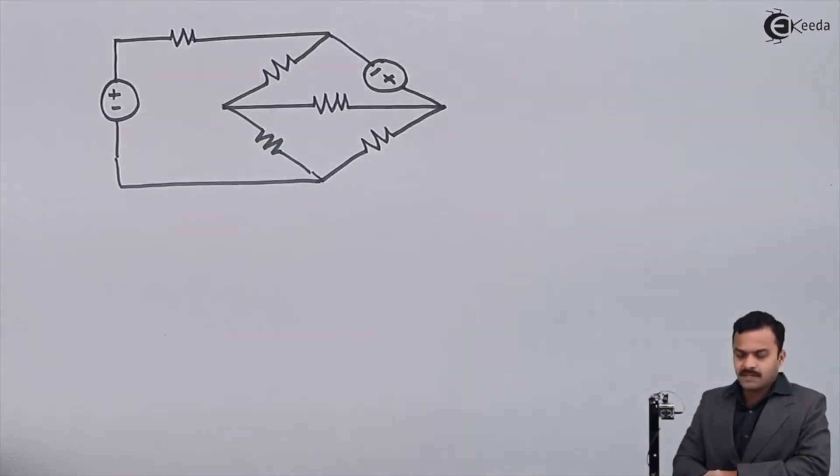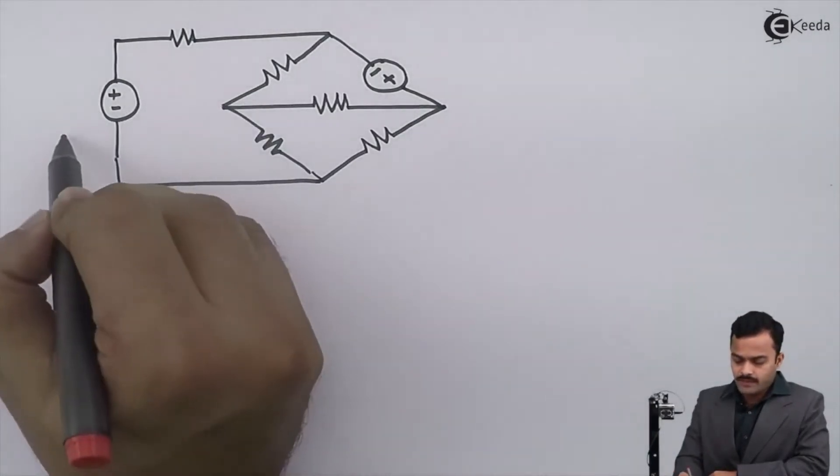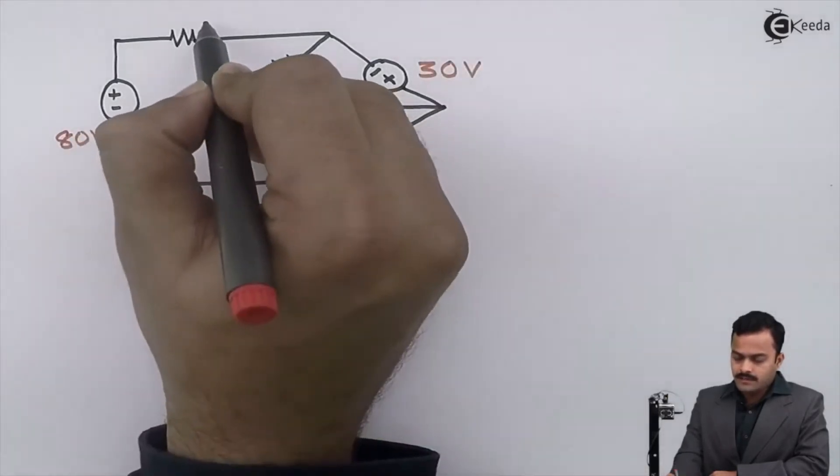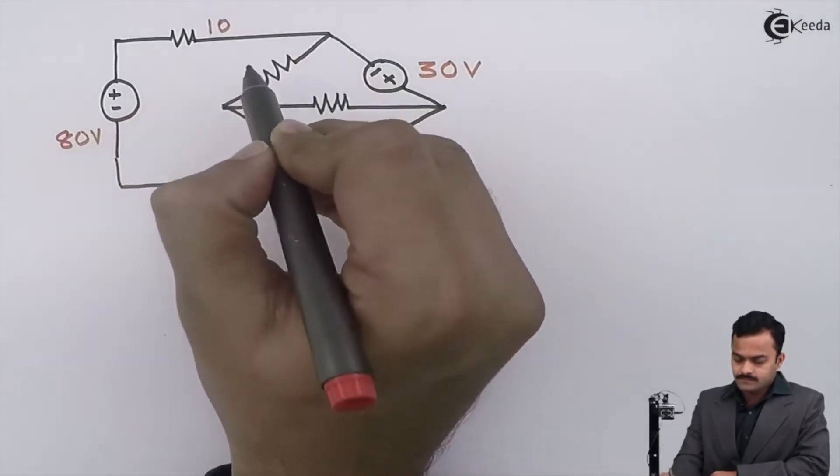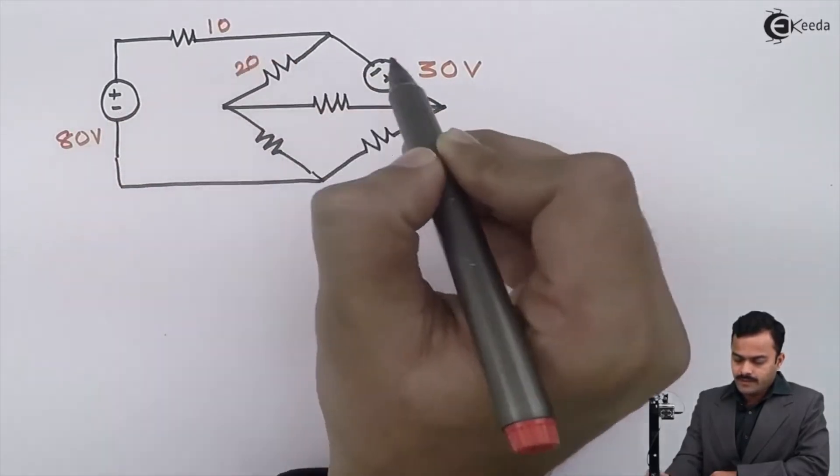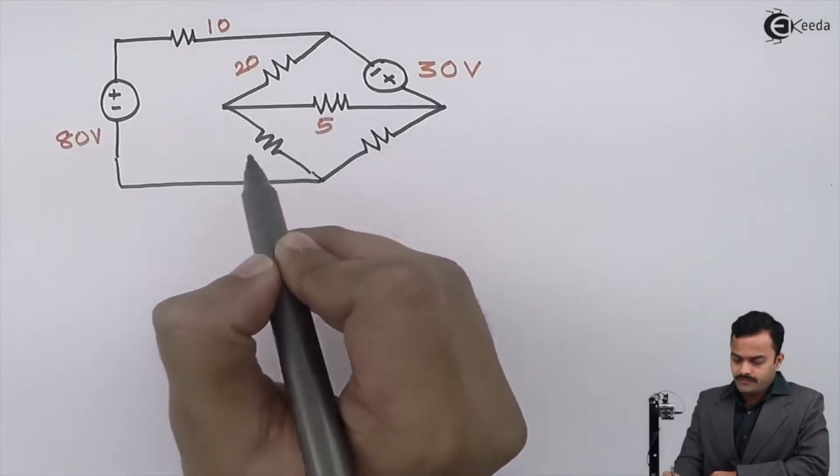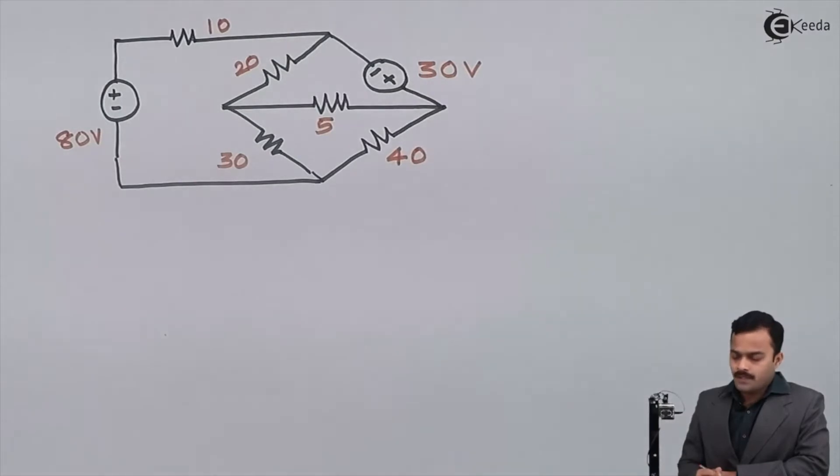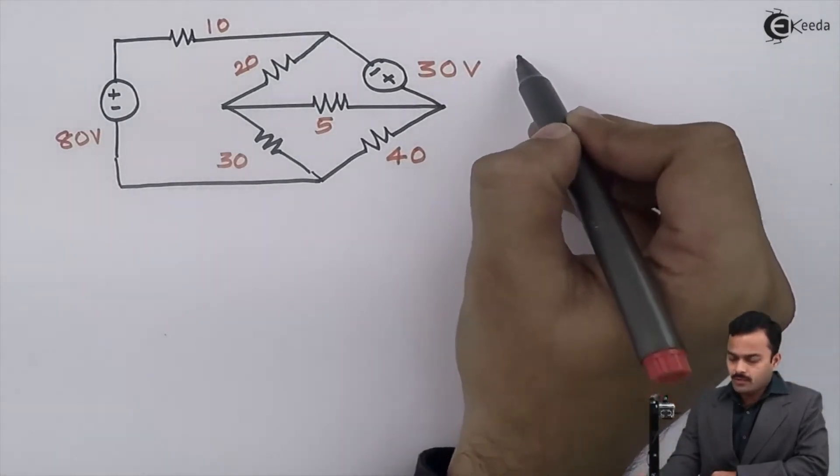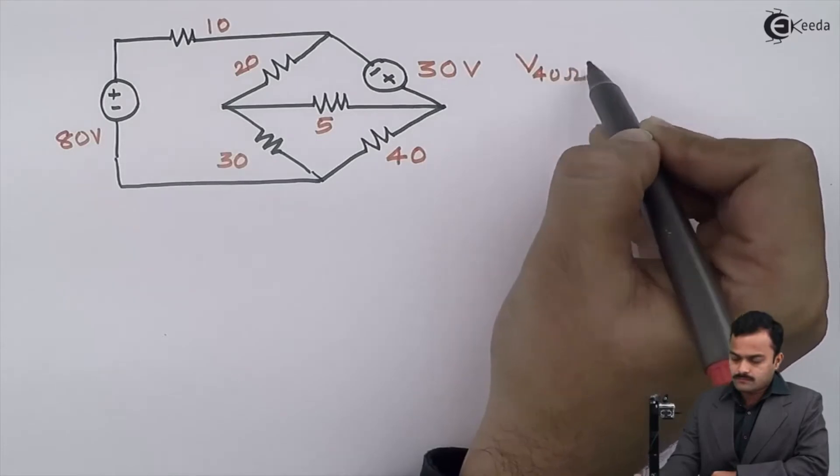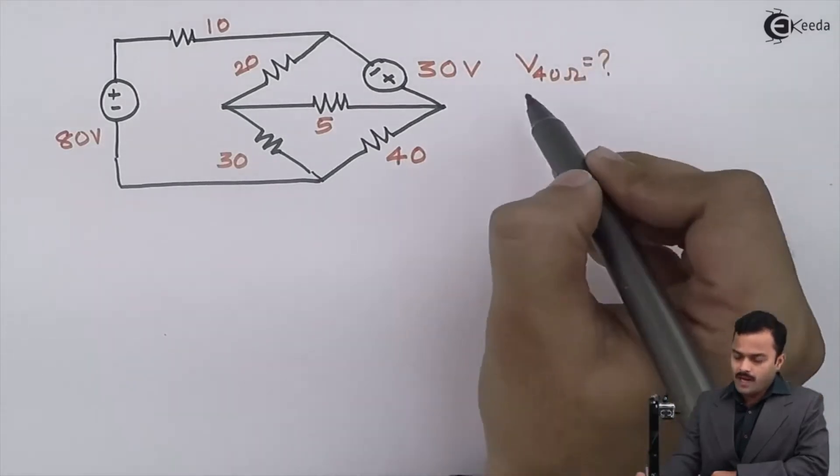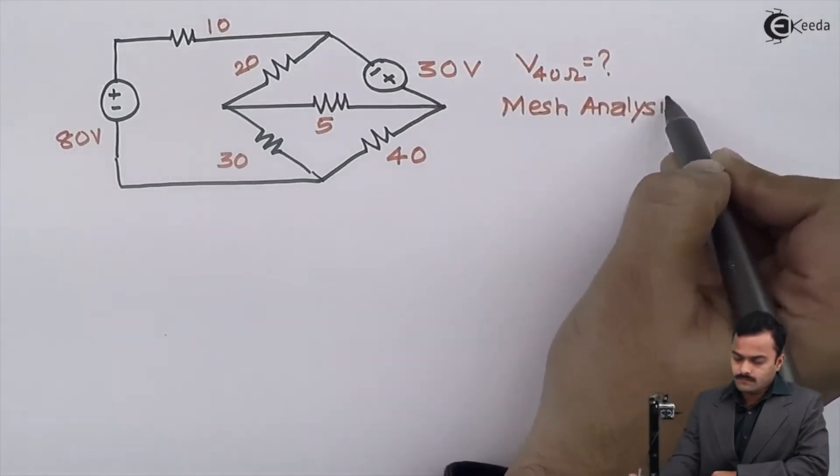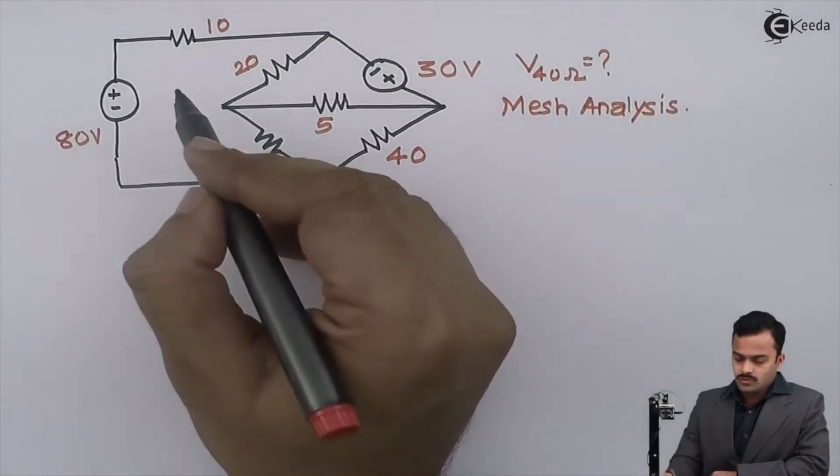The circuit is having voltage sources of 80 volt and 30 volt, and resistances are 10, 20, 5, 30, and 40 ohm. The objective is to get voltage across 40 ohm and we have to use mesh analysis.